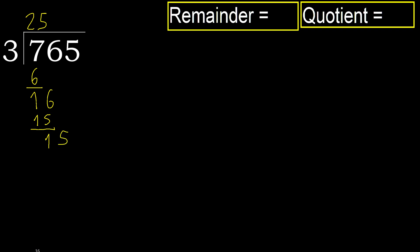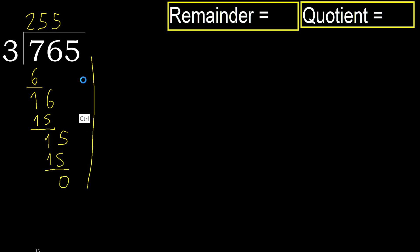15. 3 multiplied by 5 is 15, ok. Subtract. Next: there is no number, therefore finish it.